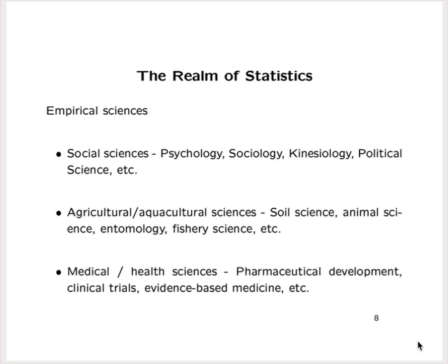The medical and health sciences are another area where statistics has grown up. Randomized clinical trials are pretty much the gold standard for developing pharmaceuticals and drugs, making clinical trials a very big area for statistics. Evidence-based medicine is becoming more and more prevalent, with physicians utilizing patient-level data combined with population-level data — perhaps using a statistical model that has been produced and provided to them. The social sciences, agricultural sciences, and medical and health sciences are three very big areas in the empirical sciences where statistics has grown.